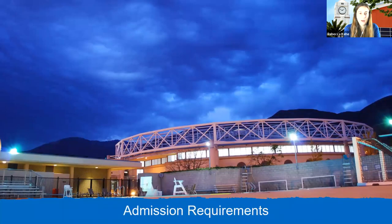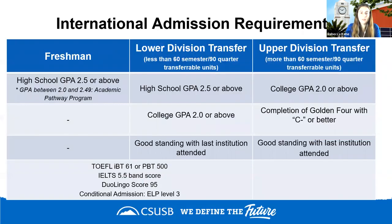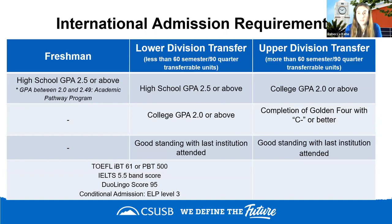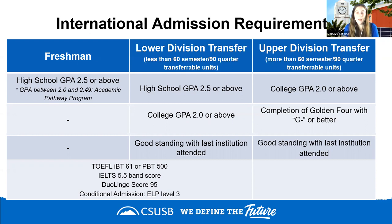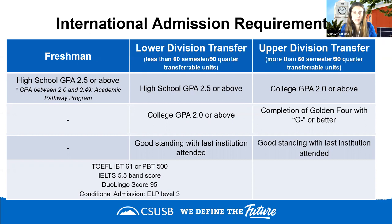For admission requirements, we primarily look at freshman requirements. We require a high school GPA of 2.5 or above, though recall that the scholarship requires 3.5 or higher. For students with a GPA between 2.0 and 2.49, we offer a path to admission through our Academic Pathway Program. In this pathway, every course taken counts toward your final degree — no filler courses. Students take university-level composition, math, lab science, and fine arts.